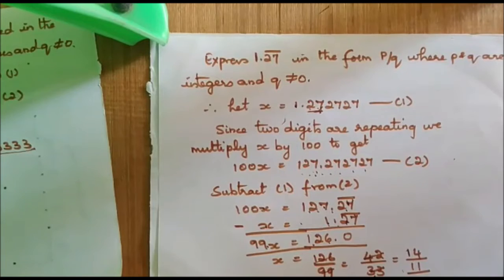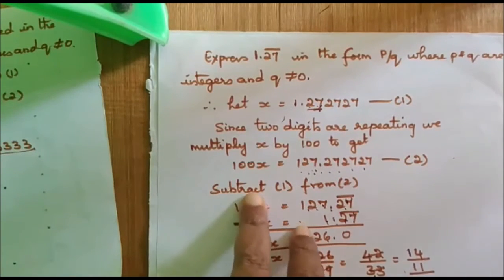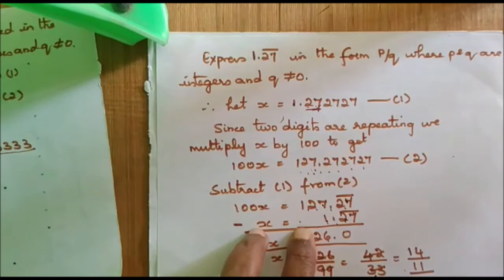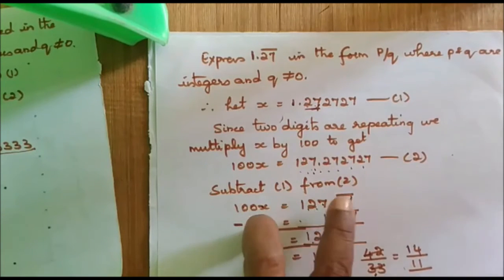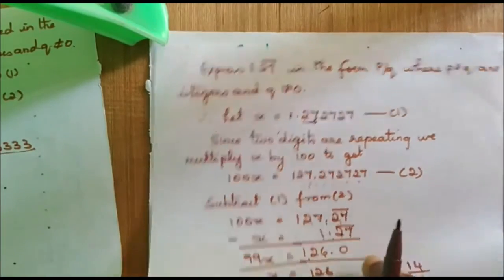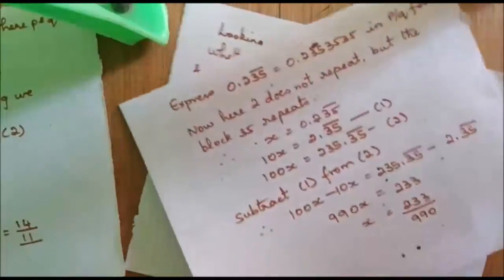Whatever number is given, assume it as X. Then check what block is repeating — is it a single digit, a 2-digit, or a 3-digit block? If 2 digits are repeating, multiply by 100. If 3 numbers are repeating, multiply by 1000. Then subtract the first equation from the second.